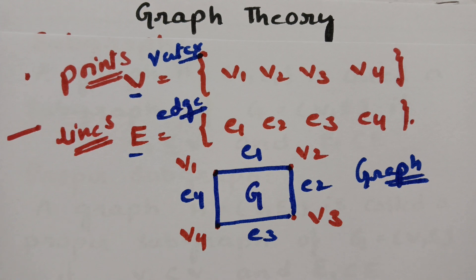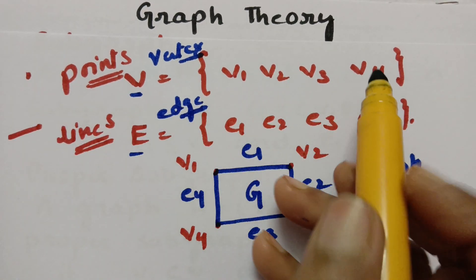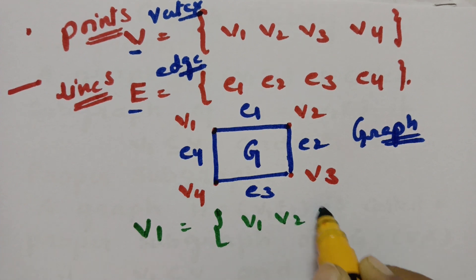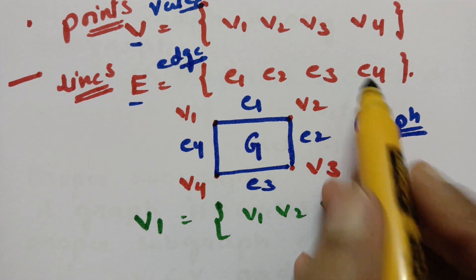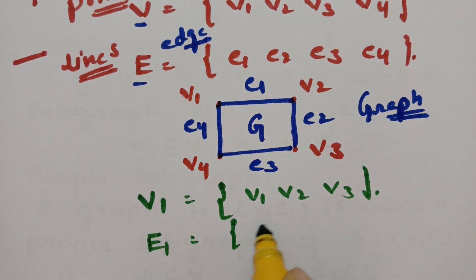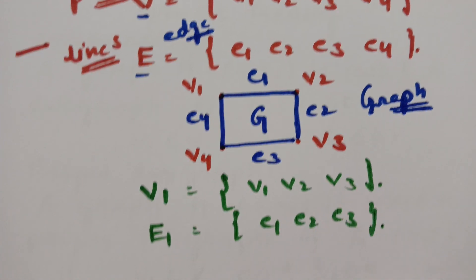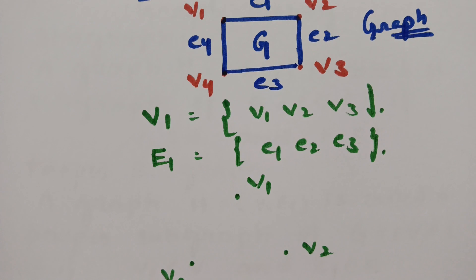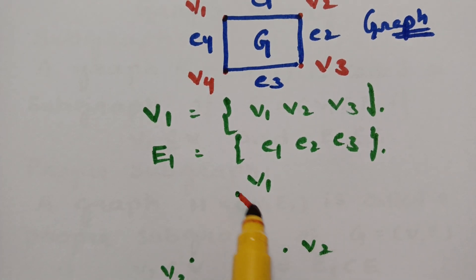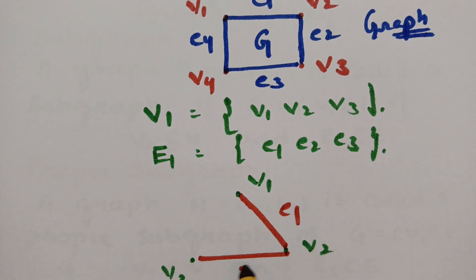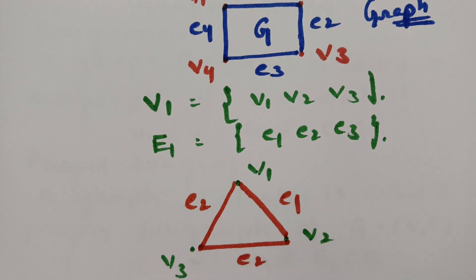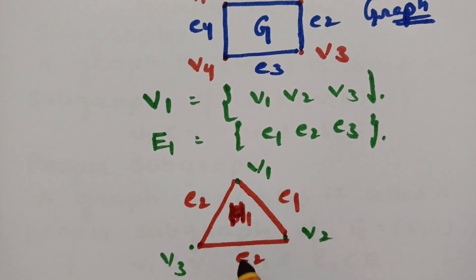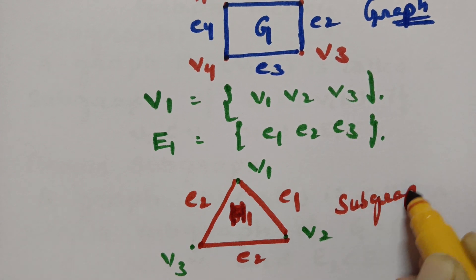So what is a subgraph? We have the main set V with four vertices. If I take a subset V1 with only three vertices — V1, V2, and V3 — and from the edge set I consider E1, E2, and E3, then joining these three points with edges gives another graph. This graph is called H, and it is a subgraph.